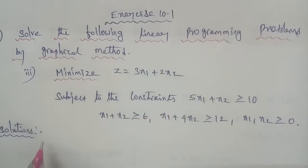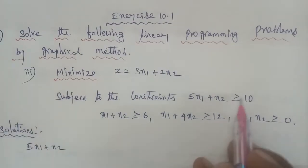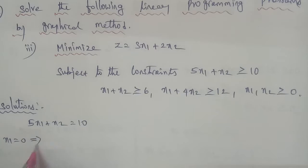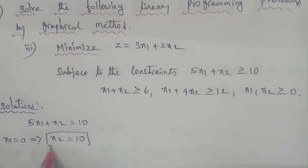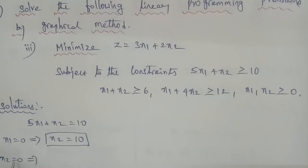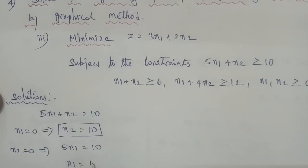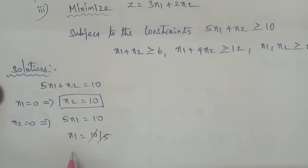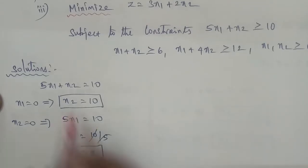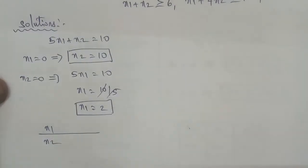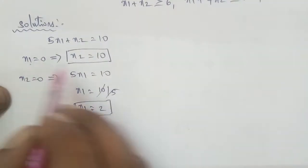We have the first equation: 5x1 plus x2 equal to 10. When x1 is equal to 0, x2 is equal to 10, giving point (0,10). When x2 is equal to 0, x1 is equal to 2, giving point (2,0).